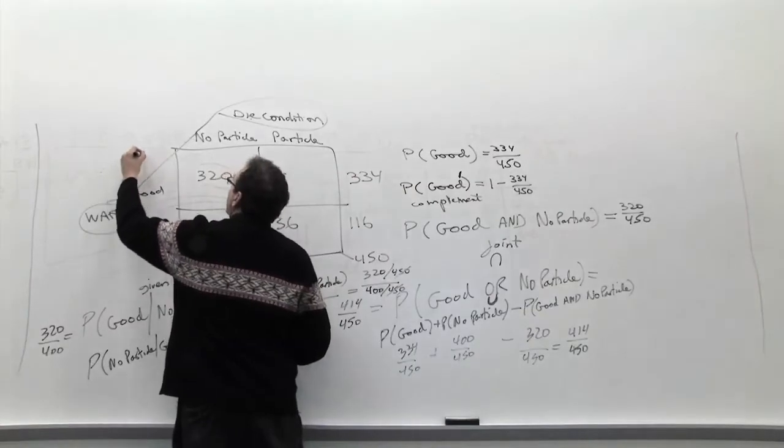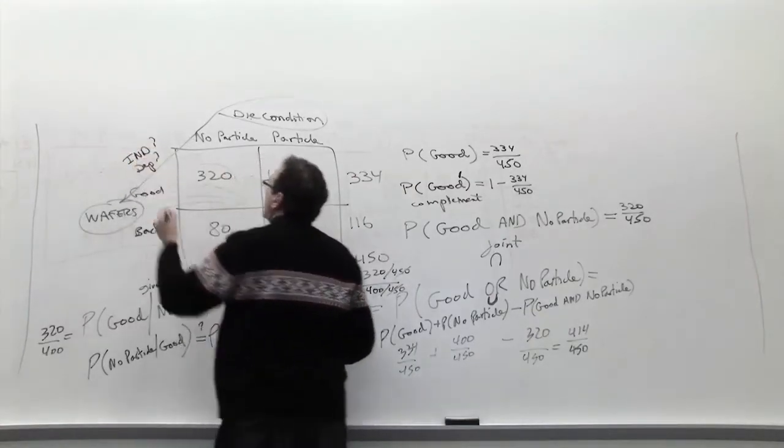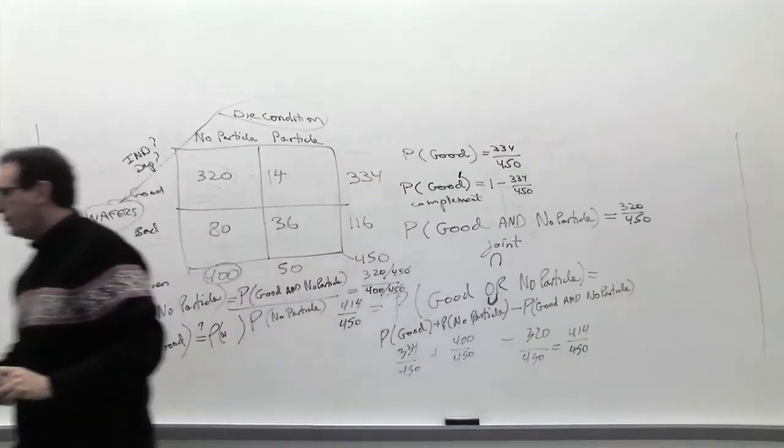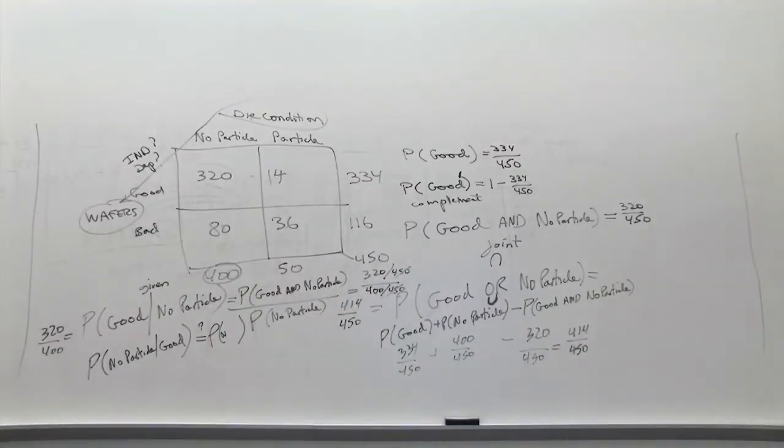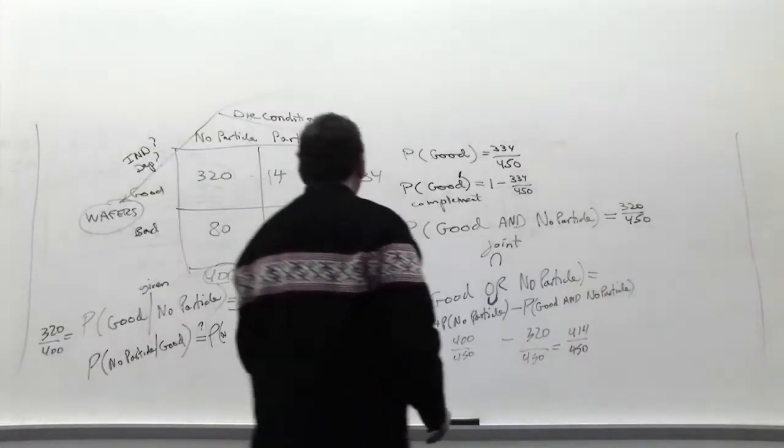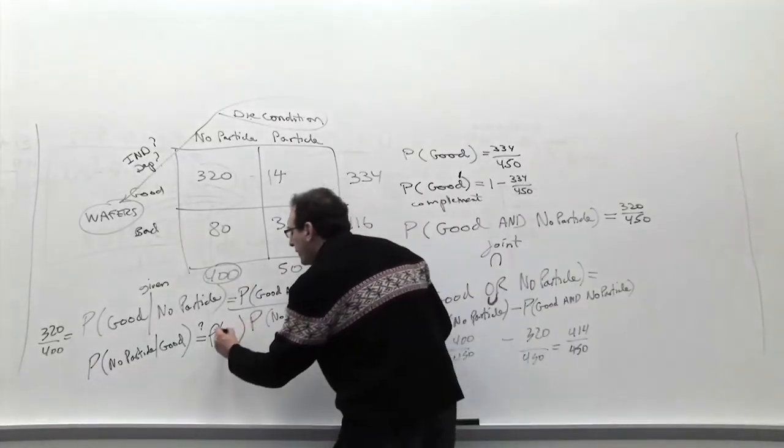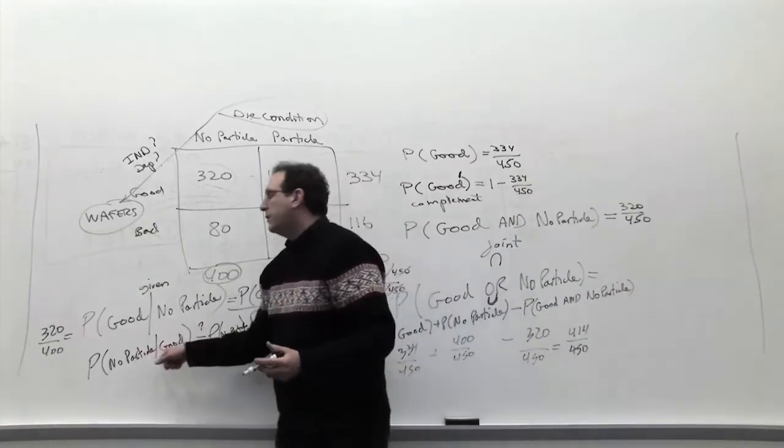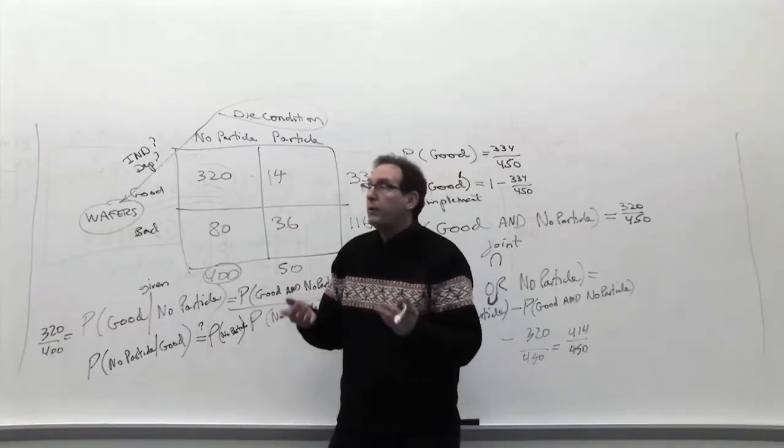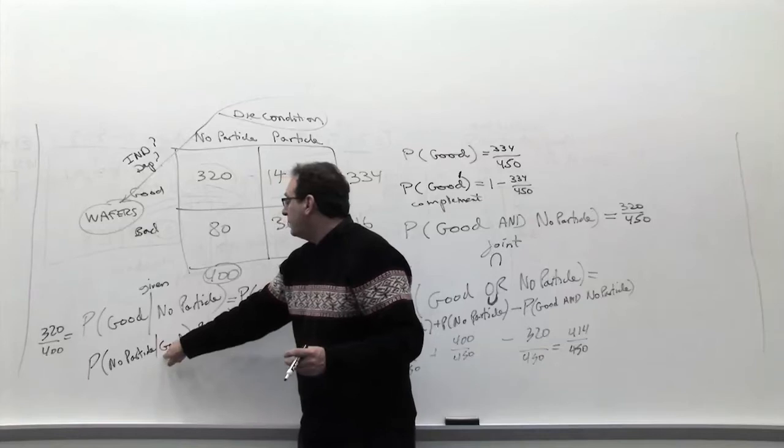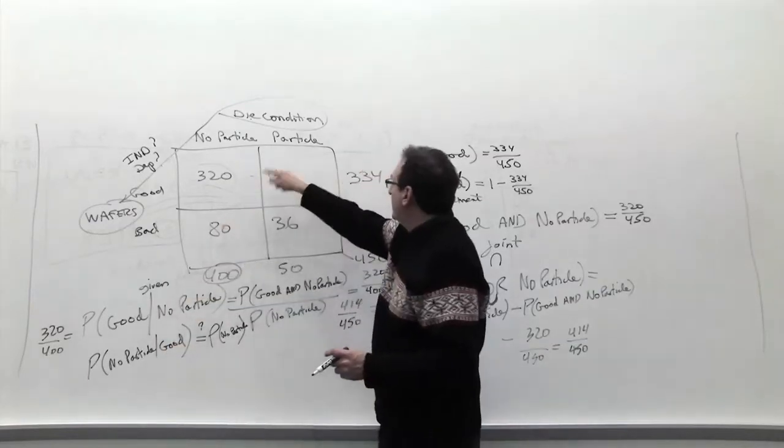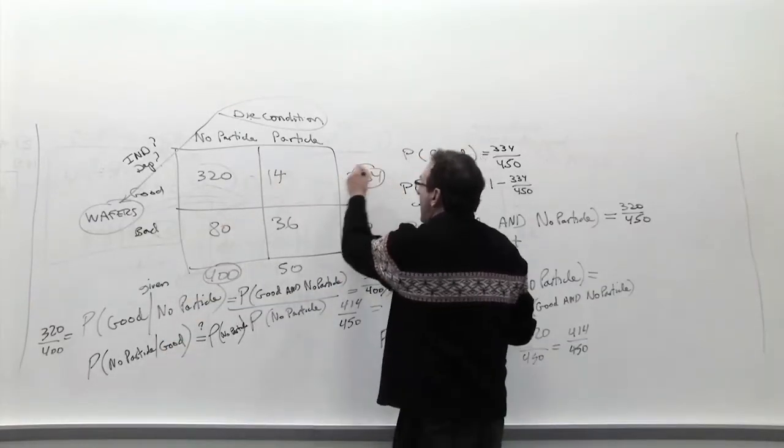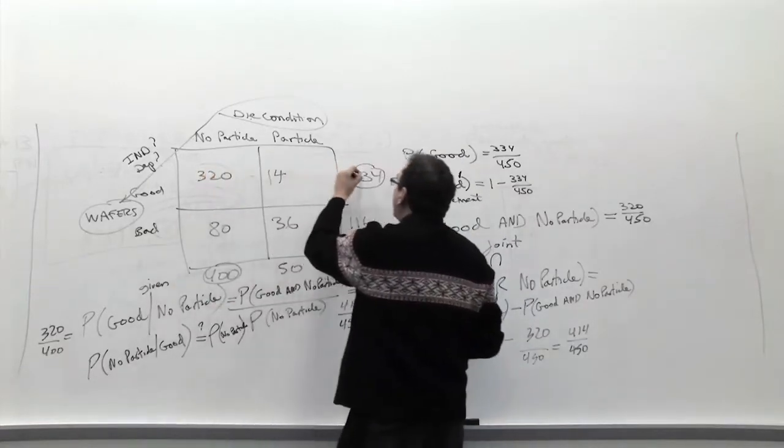Are they independent or dependent? Those are the two choices. So the answer is you try to prove that it's no particle. Now these are all easy calculations. What's the chance of no particle given good? We can do it by the formula, maybe we can also do it by common sense. We know the part of that. We're talking about something that is definitely good. We're talking about these 334. How many of those have no particles? 320 out of 334.